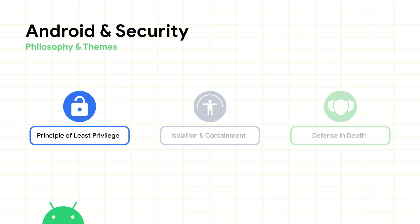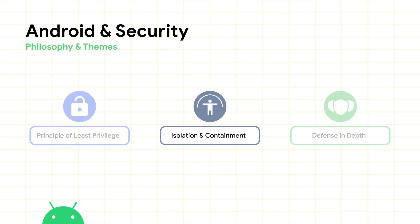Principle of least privilege means that every component in the system must have the least possible privilege and permission surface for its operation. Isolation and containment means that system components and apps must be isolated from each other such that vulnerabilities in one don't end up becoming system-wide exploits. Furthermore, we focus a lot on making sure that any exploits are appropriately contained — we work very hard to limit the blast radius.